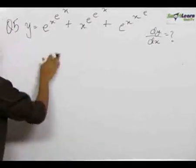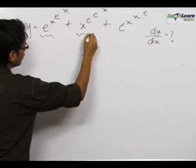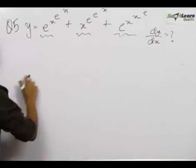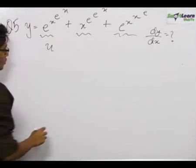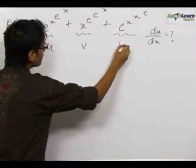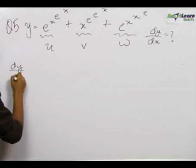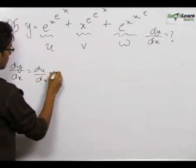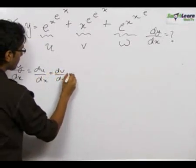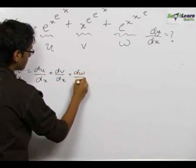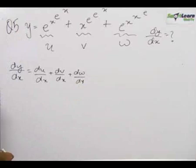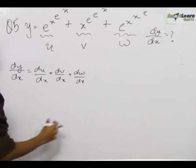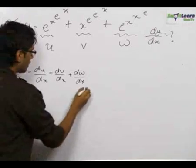In such type of problems, where y is the sum of 2 or 3 functions of x, we consider each function individually. We consider the first term as u, the second as v, and the third as w. So dy by dx will be equal to du by dx plus dv by dx plus dw by dx. We find the differentiation of each separately and then add them up to get the final answer.